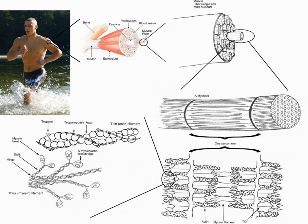Muscular activity accounts for much of the body's energy consumption. All muscle cells produce adenosine triphosphate molecules which are used to power the movement of the myosin heads. Muscles have a short-term store of energy in the form of creatine phosphate which is generated from ATP and can regenerate ATP when needed with creatine kinase. Muscles also keep a storage form of glucose in the form of glycogen. Glycogen can be rapidly converted to glucose when energy is required for sustained, powerful contractions. Within the voluntary skeletal muscles, the glucose molecule can be metabolized anaerobically in a process called glycolysis which produces two ATP and two lactic acid molecules in the process.